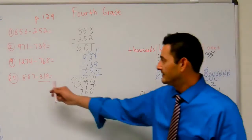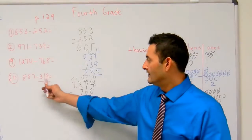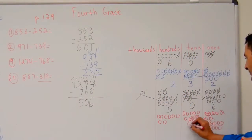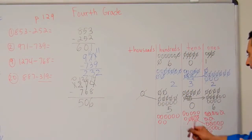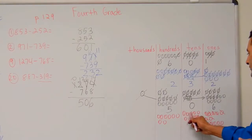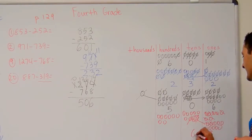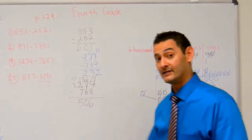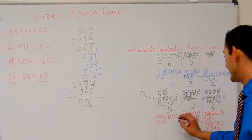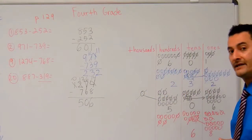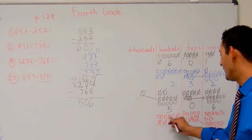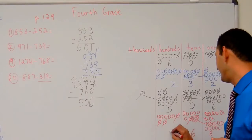Now let's subtract one ten. Get rid of that one ten there. How many do I have now? One, two, three, four, five, six — I've got six tens. Now let's subtract three hundreds — take away one, two, three. How many hundreds do I have left? One, two, three, four, five — I've got five hundreds.